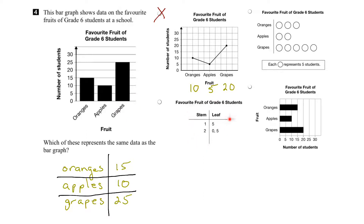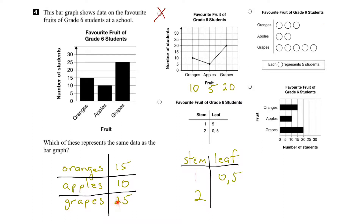Let's now look at the stem-and-leaf plot of these data. The stem would come from the tens digits — we have ones and twos. The leaf part comes from the ones digits. For ones, we have both five and zero, so we write zero and five. And for the two, we have just one digit, the five. That's what the stem-and-leaf plot should look like for these data. Looking at the one we're given, we can see that it's not correct — the zero and five is with the two, not with the one that it should be. Therefore, this is not an accurate representation of these data.